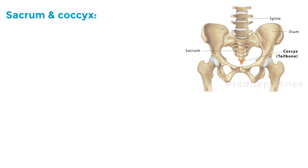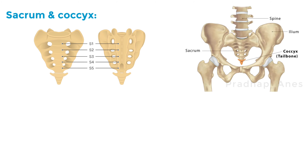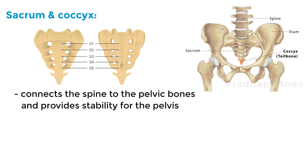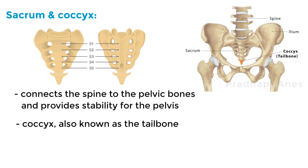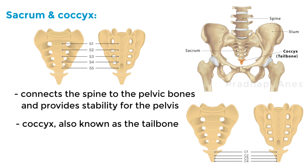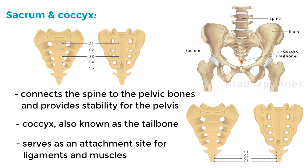The sacrum and coccyx. At the base of the spine, we find the sacrum and coccyx. The sacrum is a triangular bone formed by the fusion of five vertebrae; it connects the spine to the pelvic bones and provides stability for the pelvis. The coccyx, also known as the tailbone, consists of four fused vertebrae and serves as an attachment site for ligaments and muscles.